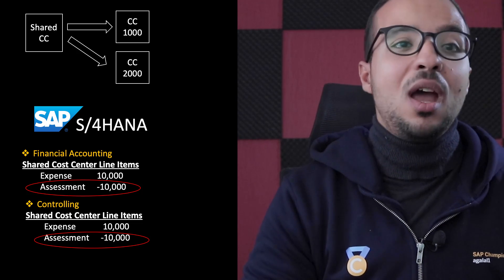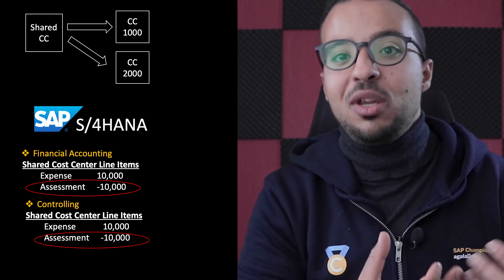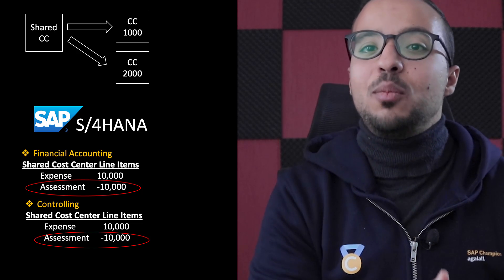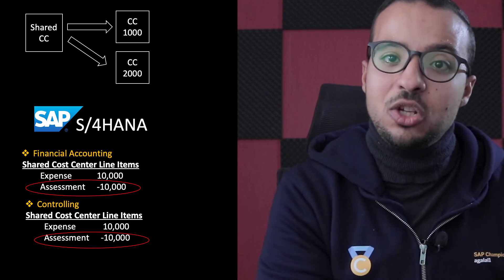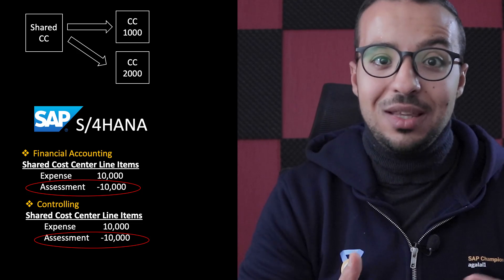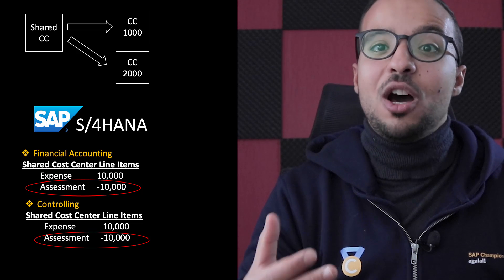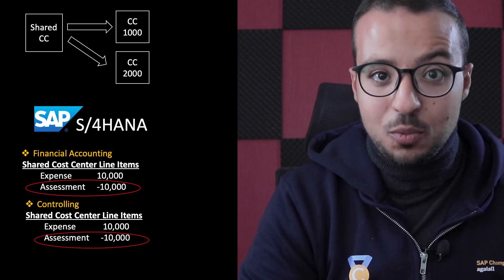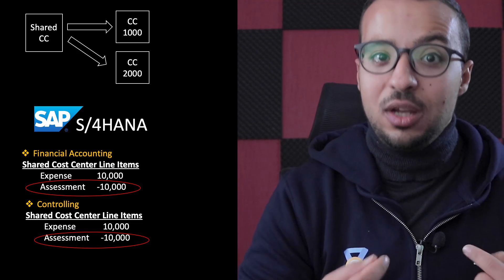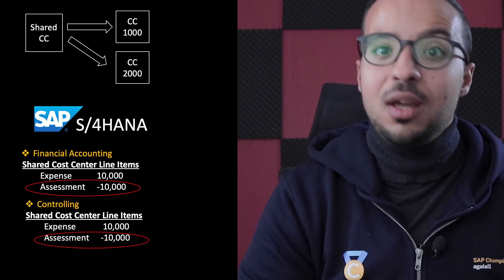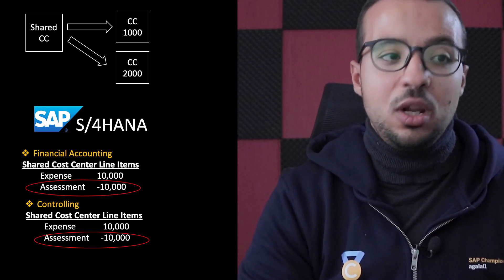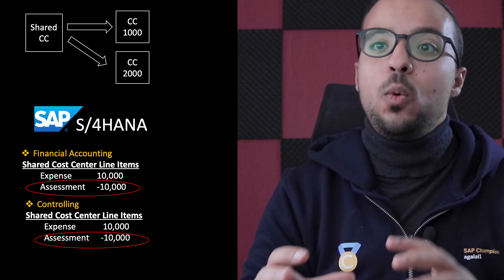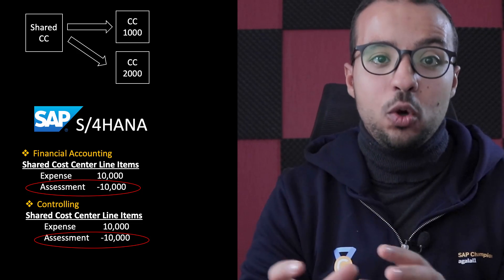When generating any report in financial accounting, we can see the entries posted by primary and secondary cost elements, and we can always identify whether an entry is coming from an external accounting entry (primary) or from an internal allocation in cost management (secondary). In SAP S/4HANA, when we run the cost assessment, financial accounting entries are posted together with the controlling entries immediately in real time, so there is no need for reconciliation.